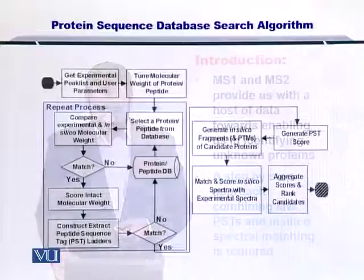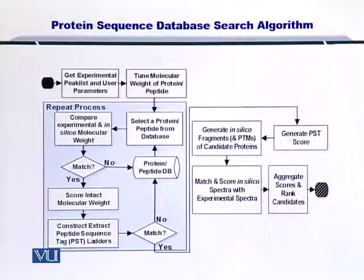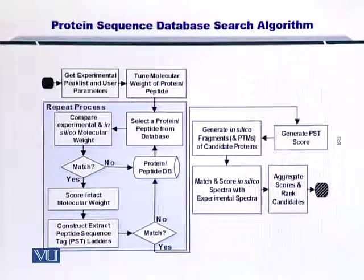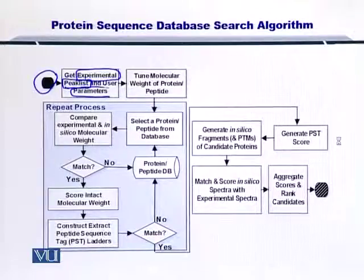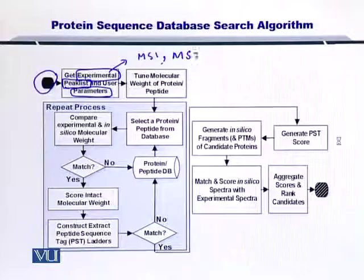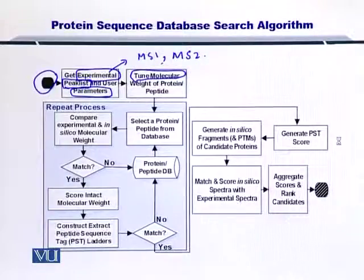In this flow chart, I am going to give you a step-by-step guide on how to integrate each of these three methods. First of all, you start from here — you get the experimental peak list and some parameters to search this peak list. This peak list typically comprises of MS1, that is the intact mass, and MS2, that is the fragment mass. If you want, you can tune the molecular weight of the protein as well, depending upon any measurement error, or most of the times you can skip this step.